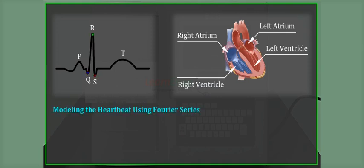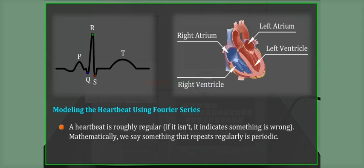Modeling the Heartbeat Using Fourier Series. A heartbeat is roughly regular; if it isn't, it indicates something is wrong. Mathematically, we say something that repeats regularly is periodic. Such waves can be represented using a Fourier series.